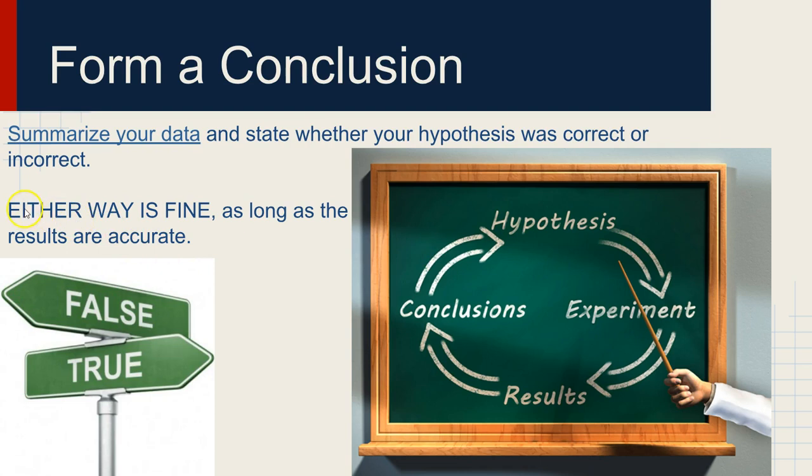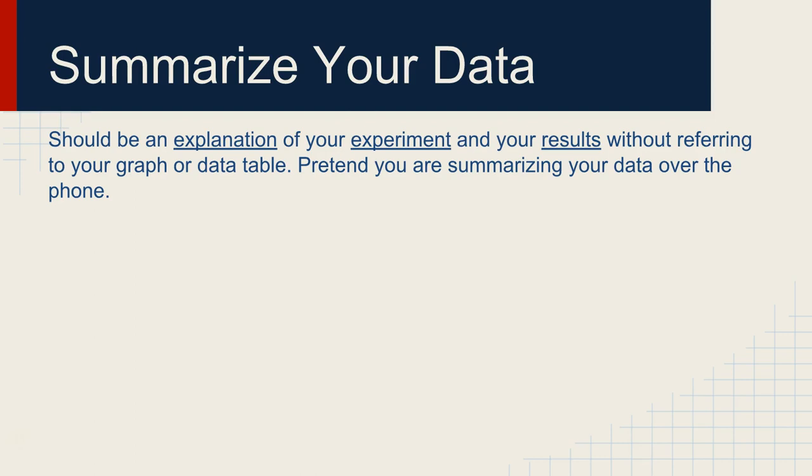And just as a point of emphasis here, either way is fine. It's not a failure of an experiment if your hypothesis was incorrect. As long as we find out one way or another, that's a good thing. That means we set up the experiment correctly, and we determined that your hypothesis was incorrect, but we learned something. Or we determined that your hypothesis was correct, and we learned something. Either one is fine.